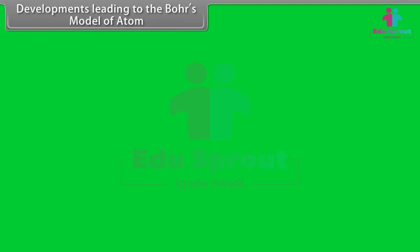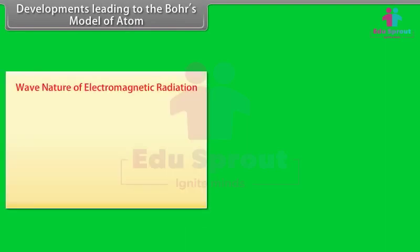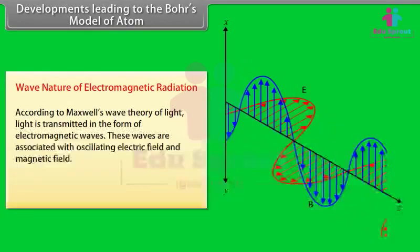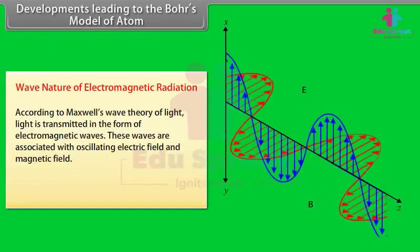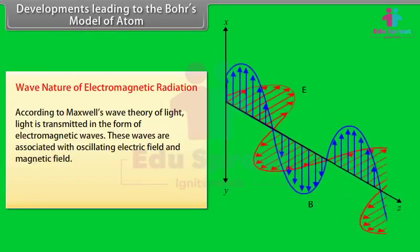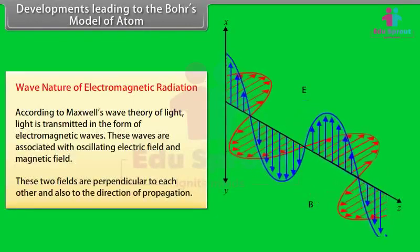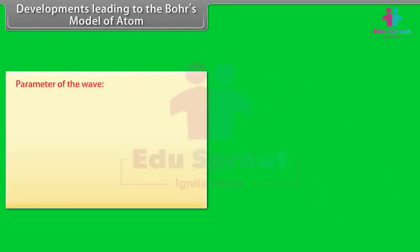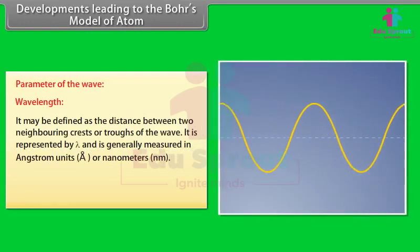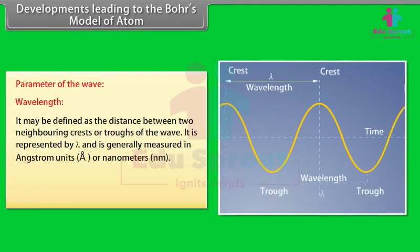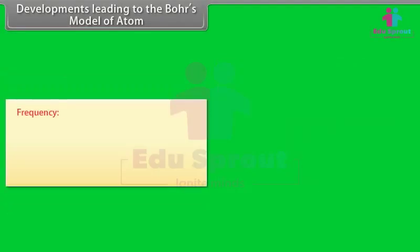Development leading to Bohr's model — Wave nature of electromagnetic radiation: According to Maxwell's wave theory, light is transmitted as electromagnetic waves associated with oscillating electric and magnetic fields, perpendicular to each other and to the direction of propagation. Wavelength is the distance between two neighboring crests or troughs, represented by λ, measured in angstroms or nanometers. 1 Å = 10⁻¹⁰ m; 1 nm = 10⁻⁹ m.